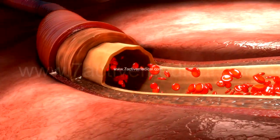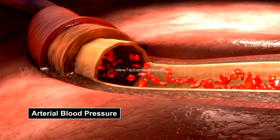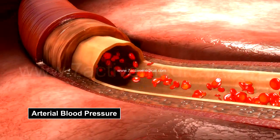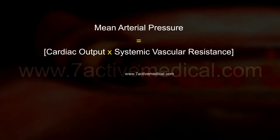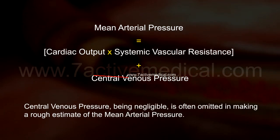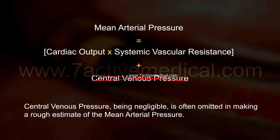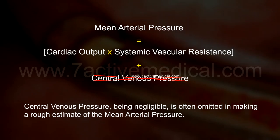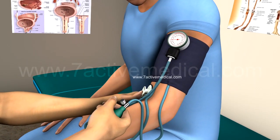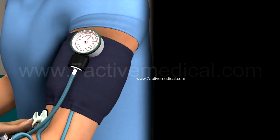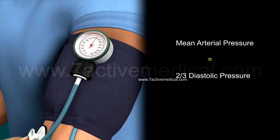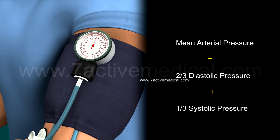The factors that influence tissue perfusion also influence arterial blood pressure, which could be a good indicator of the severity of shock. Mean arterial blood pressure can be measured by the following formula: Mean arterial pressure equals cardiac output multiplied by systemic vascular resistance, plus central venous pressure. Central venous pressure, being negligible, is often omitted in making a rough estimate. Mean arterial pressure can also be calculated with a sphygmomanometer using: MAP equals 2/3 of diastolic pressure plus 1/3 of systolic pressure.